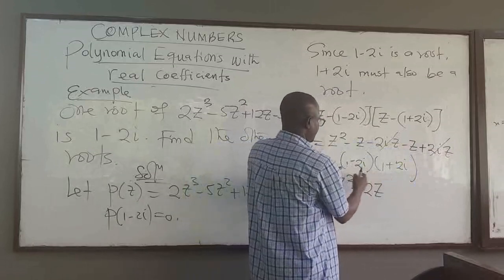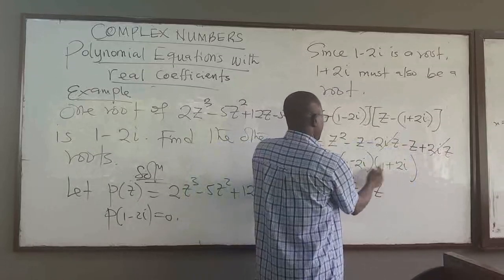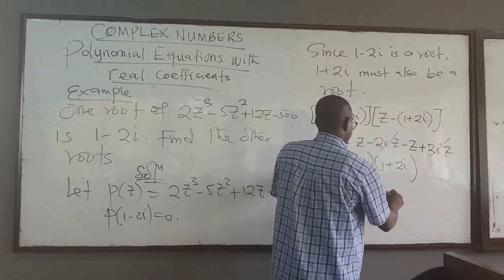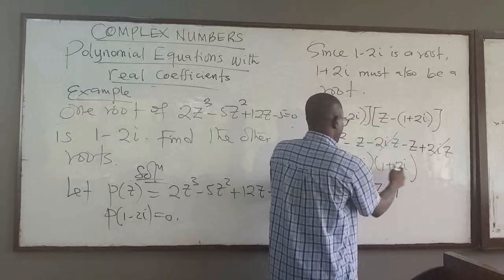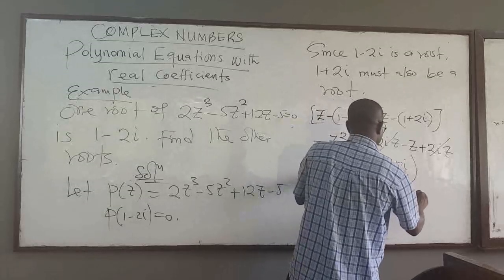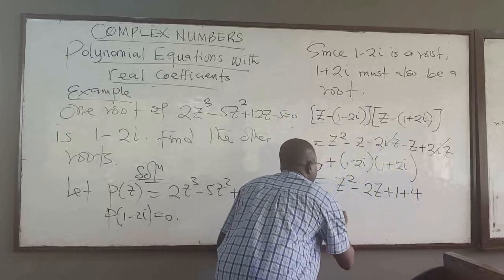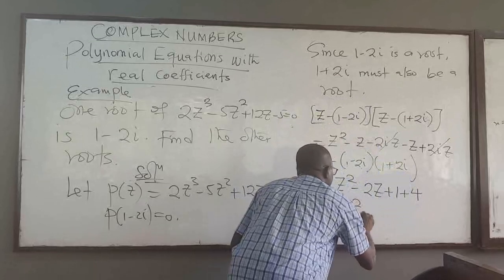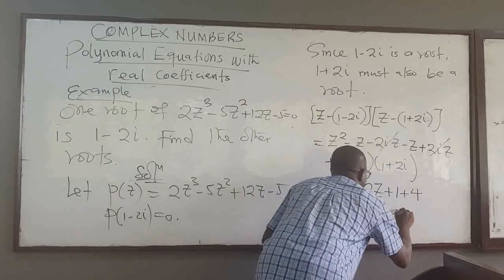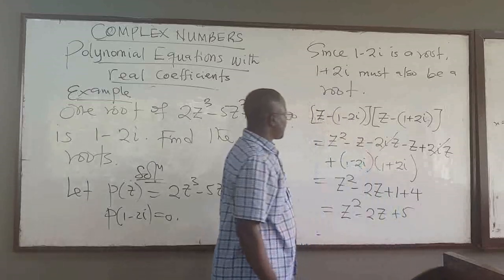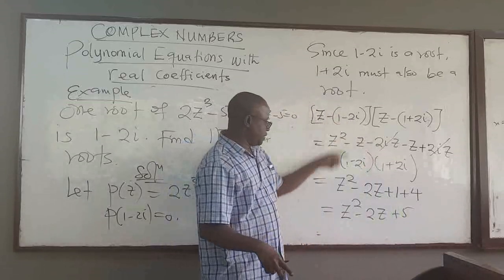This is 1, and this cancels out. So I'm basically going to have 1. If I multiply this, I'm going to have plus 4. So this is equal to z squared minus 2z plus 5. So from two of the roots, I get this polynomial.